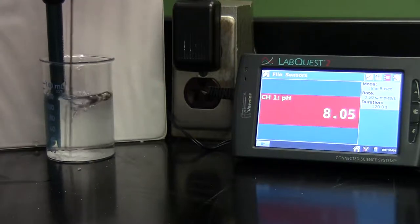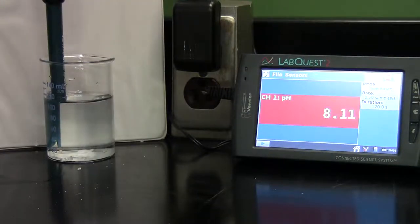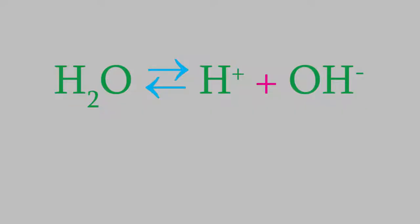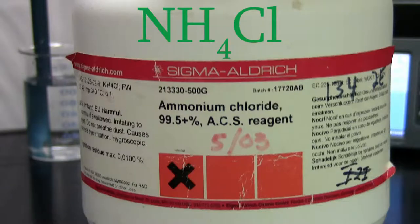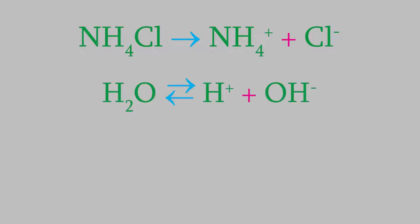The key is to remember something we talked about way back in video 20. In that video, we saw that water is constantly undergoing autoionization. That means that plain water always contains a small number of hydrogen and hydroxide ions. Now let's think about that ammonium chloride — when we add it to water, it dissolves to form ammonium ions and chloride ions.